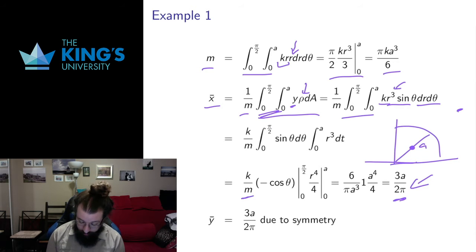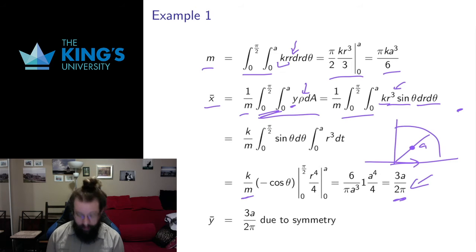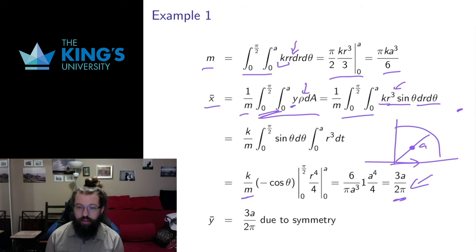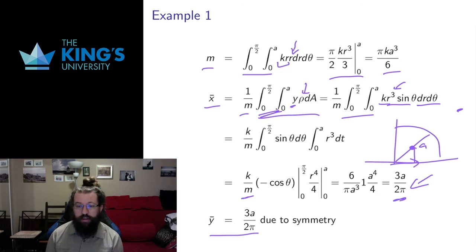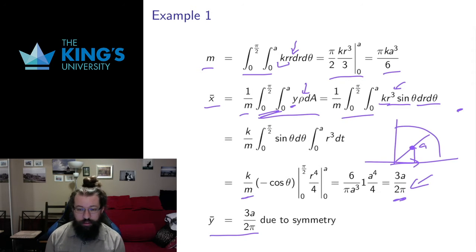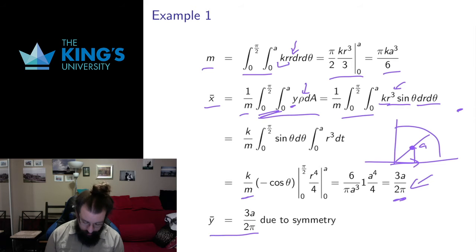It makes sense that the x-coordinate of the center of mass is a little bit less than half of a. This quarter circle is symmetric in x and y, and the density only depends on the radius, which is also symmetric in x and y. So I expect the y-coordinate of the center of mass to be exactly the same as the x-coordinate. Whenever I can make a symmetry argument it's really valuable to do so, because it saves a lot of calculation.